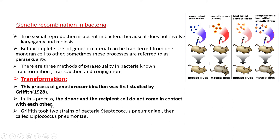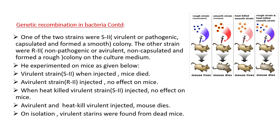After World War One, pneumonia spread seriously, and Griffith wanted to study the possibility of creating a vaccine. He studied two strains of bacteria, Streptococcus pneumoniae, also called Diplococcus pneumoniae or pneumococcus. One strain was S2, which is virulent, pathogenic, and capsulated, forming a smooth colony with a polysaccharide coat outside.